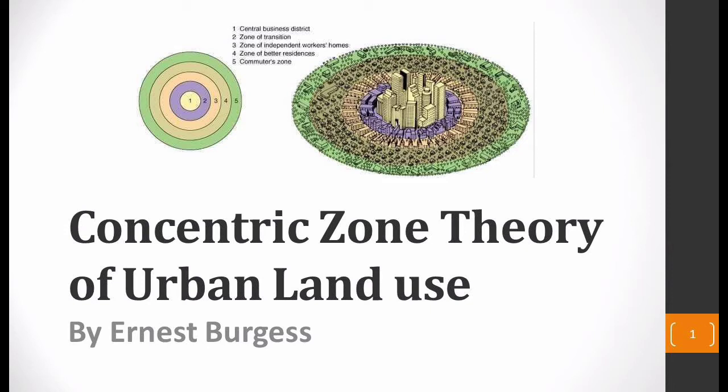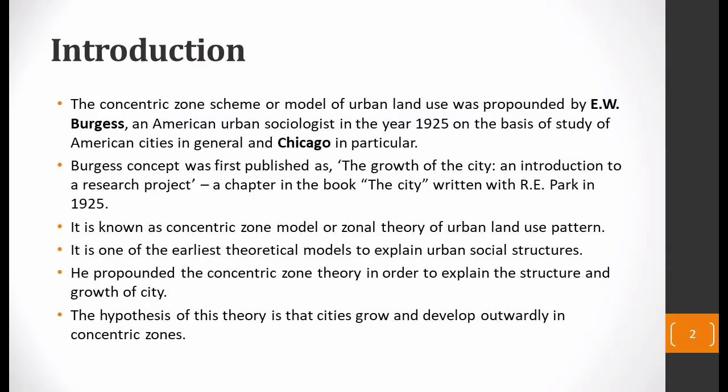Urban land use theory was the first theory for urban land use. This is why it is a very important theory, because it was the first theory that was totally based on the study of urban land use. It was given by Ernest Burgess.